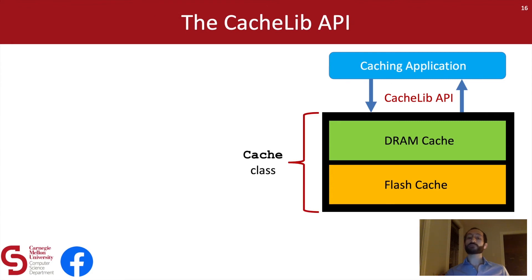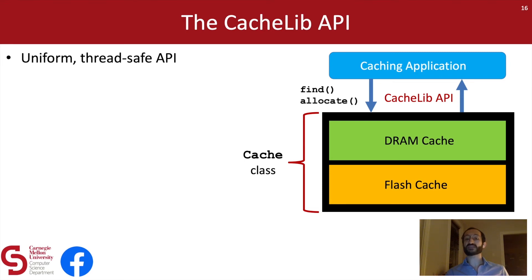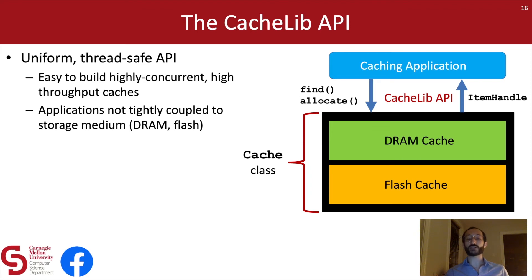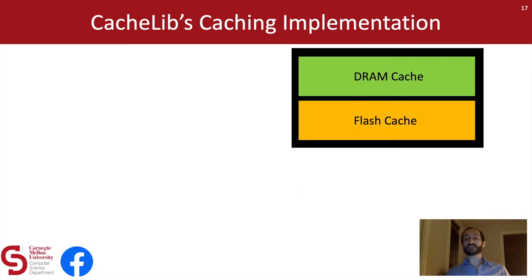The CacheLib API provides a cache object accessed through a uniform thread-safe API. This API offers simple methods like find and allocate that return item handle objects — basically smart pointers that provide zero-copy access to cached data. By making this API thread-safe, it's easy for programmers to build highly concurrent, high-throughput caches. By making this API uniform, we decouple the caching application logic from the particular storage medium used for caching.